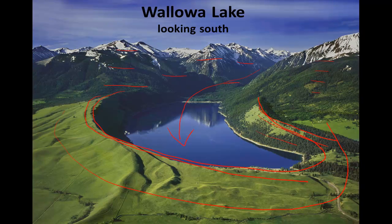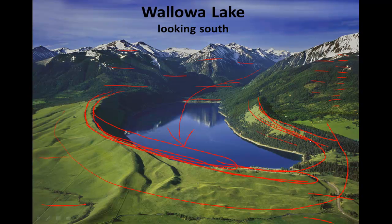Think about what this area would look like on a topographic map. We're going to have very closely spaced contours indicating steep slopes, and widely spaced contours indicating much flatter slopes. The contours are going to form loops outlining the ridge or moraine that encircles Wallowa Lake.